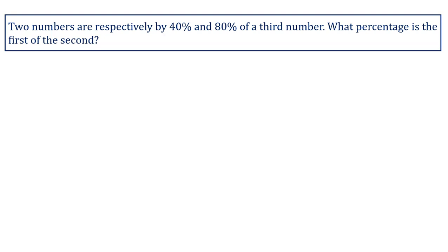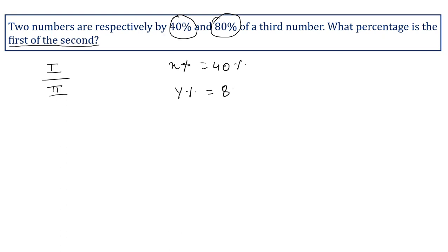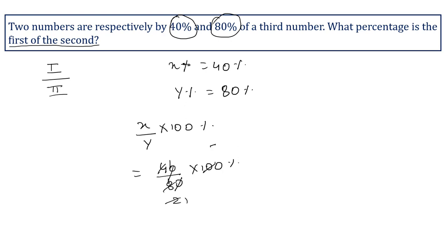Two numbers are respectively 40 percent and 80 percent of a third number. What percentage is the first of the second? First is compared with the second, so put the first value in the numerator and second in the denominator. x percent equals 40 percent and y percent equals 80 percent. Using the formula x upon y into 100 percent: 40 upon 80 into 100 percent, cancelling the zeros gives 50 percent. So 50 percent is the first of the second.